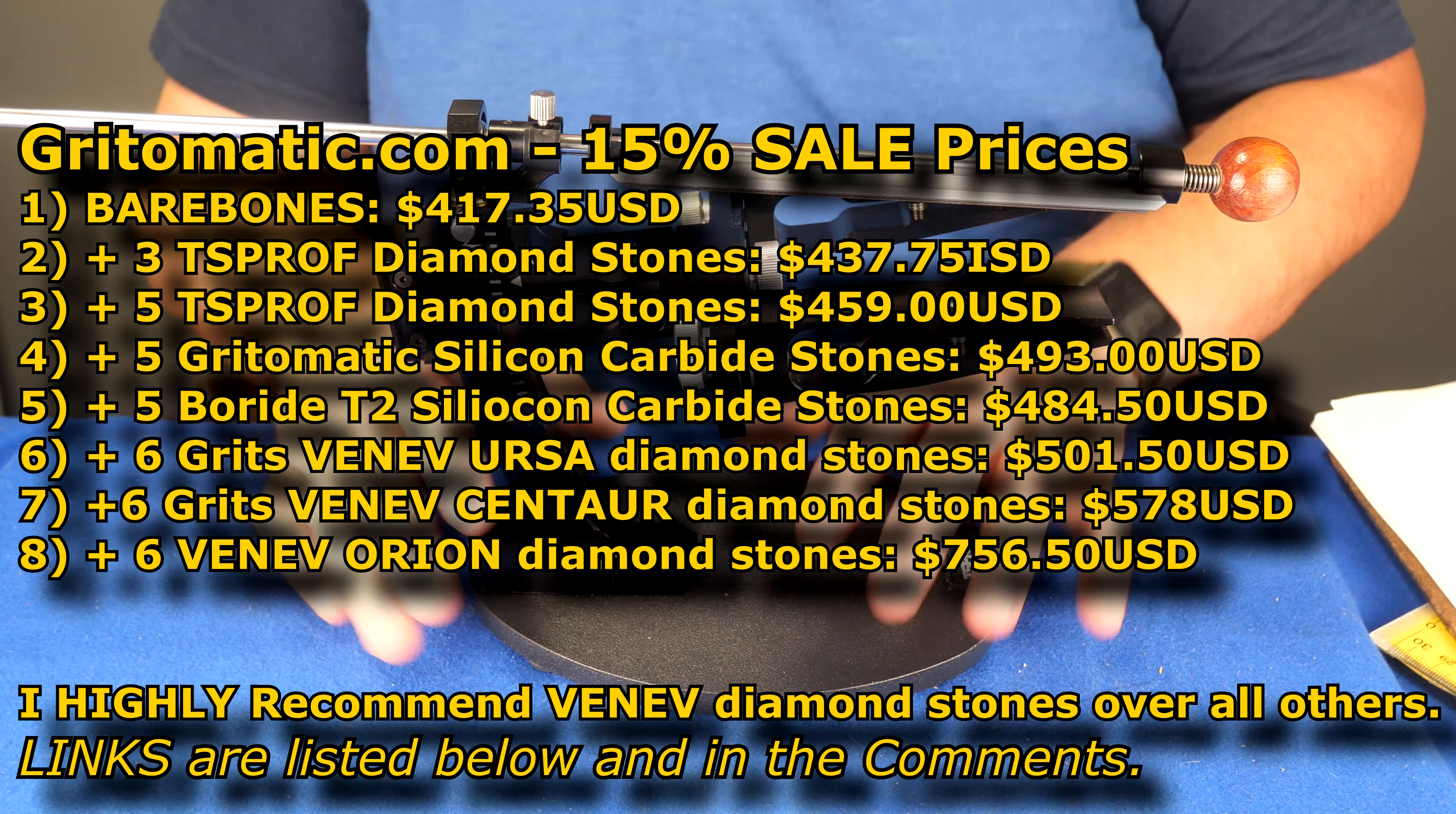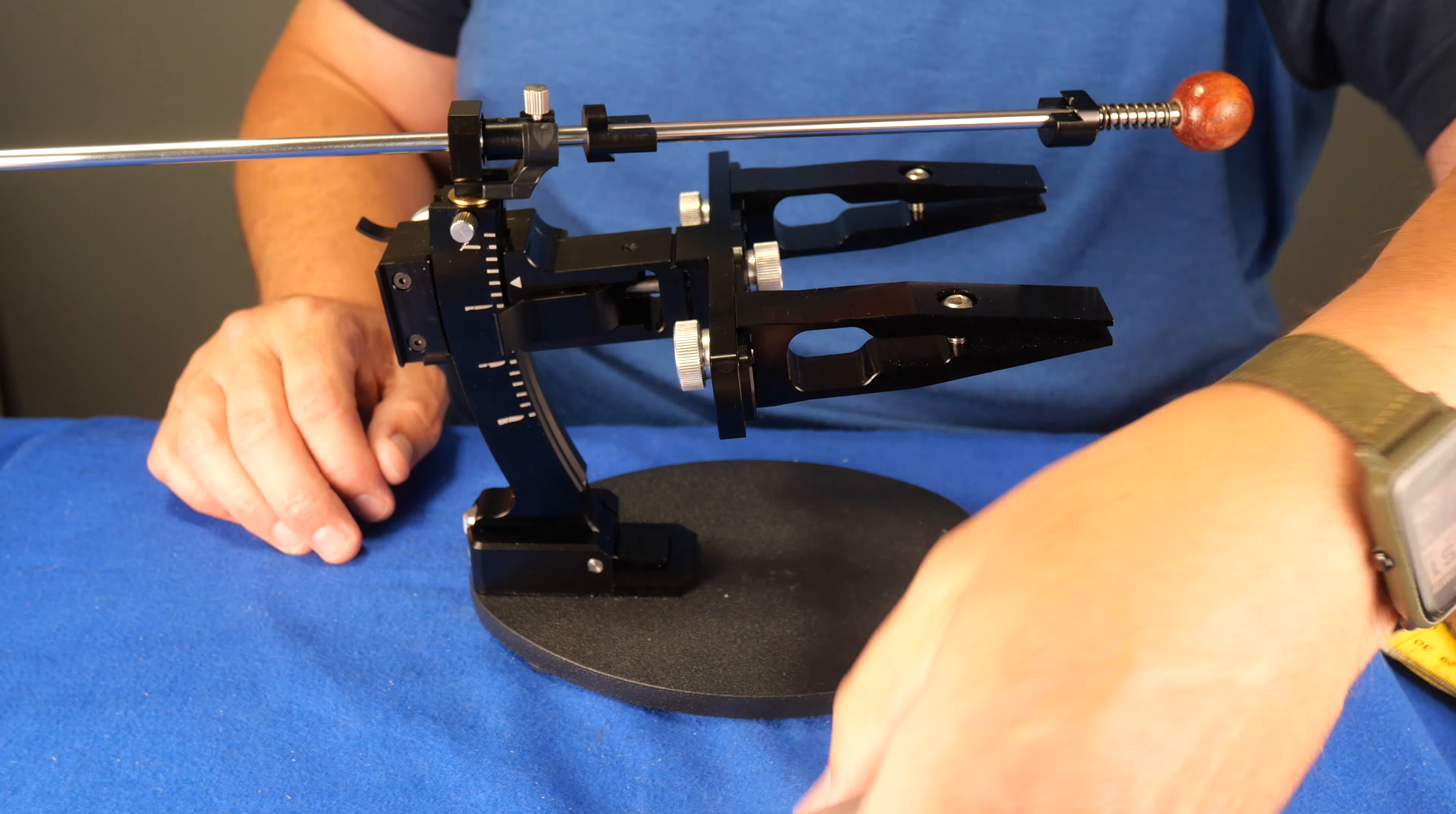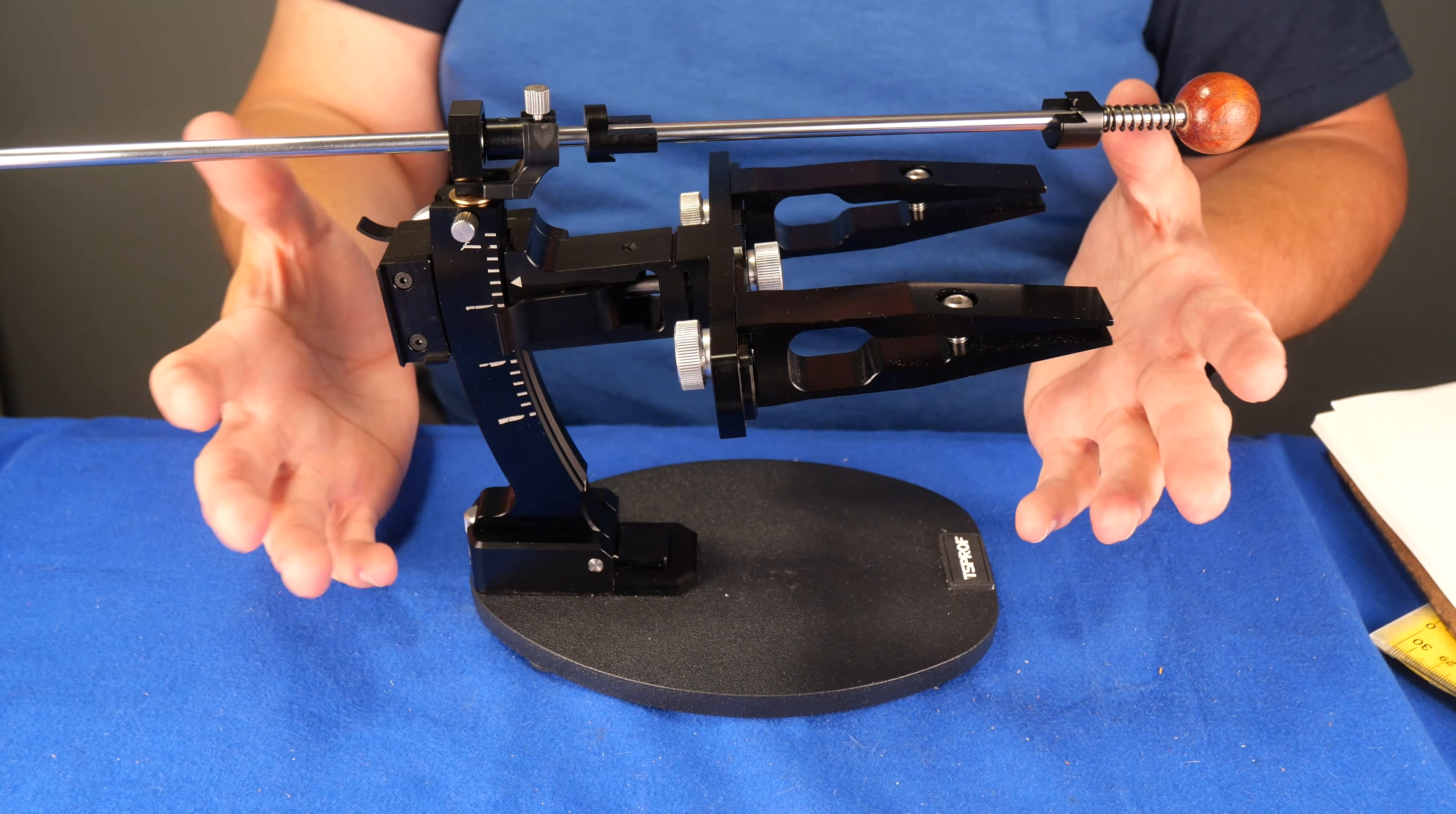How much does this thing cost? From Grid-O-Matic, you can get it just like this without any stones if you want to, if you've got your own stones. $417.35 right now. I'm talking on June the 29th when I'm putting this together, 2022. You can get it with five TS Prof diamond stones. You get five different grits. These are pretty good diamond stones. With those diamond stones, the price is 459 US dollars from Grid-O-Matic. You can get it from tsprof.com. Click USA store and it's 472 US dollars with the five diamond stones. From TS Prof store, the only option is to get it with the five stones. You can't get it without.